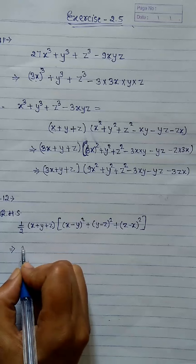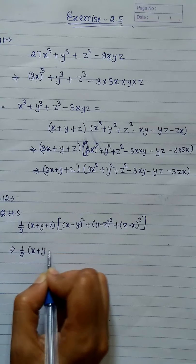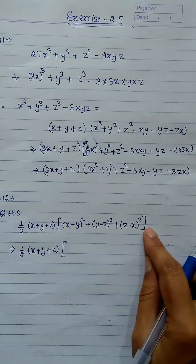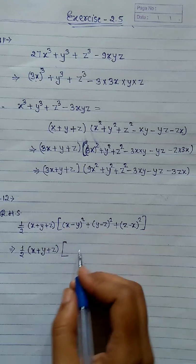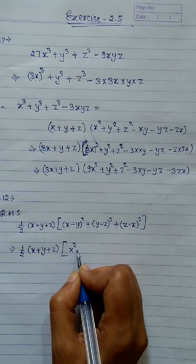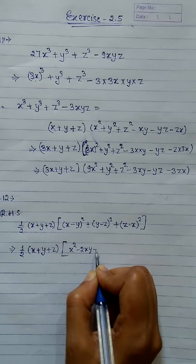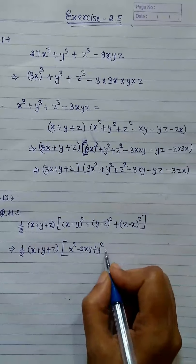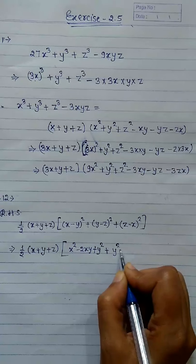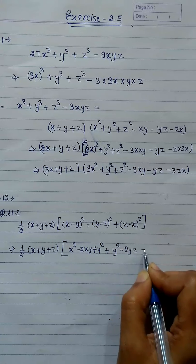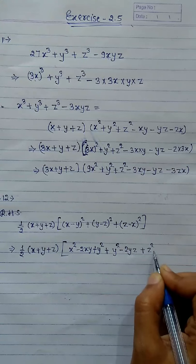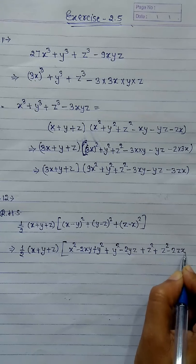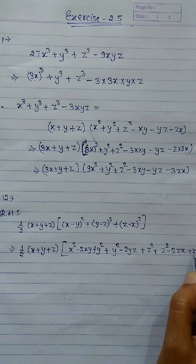We solve the brackets first. x minus y whole square equals x square minus 2xy plus y square. Then y minus z whole square equals y square minus 2yz plus z square. Then z minus x whole square equals z square minus 2zx plus x square.